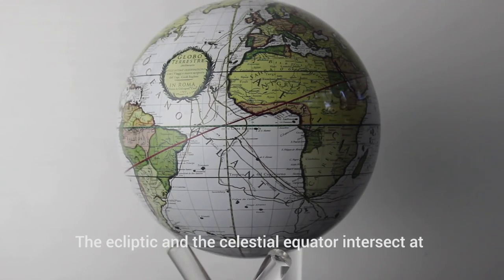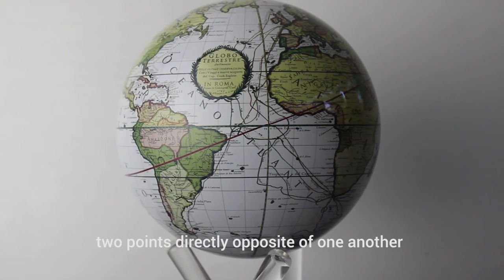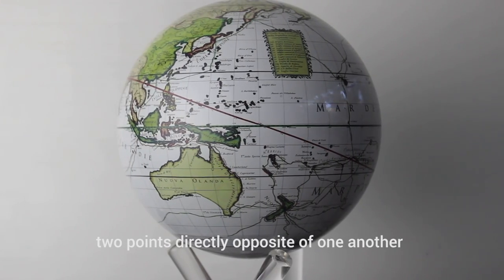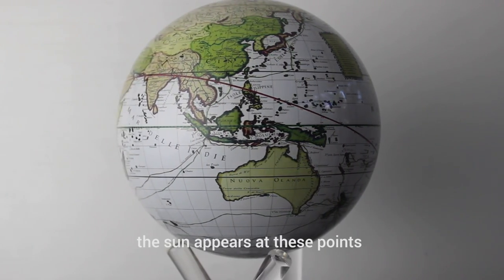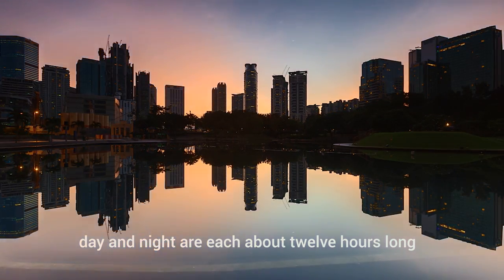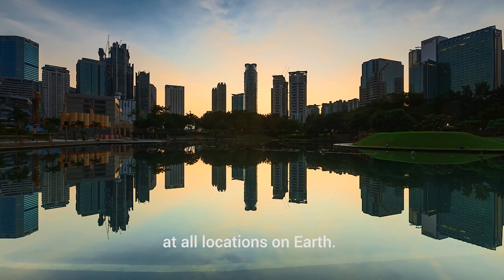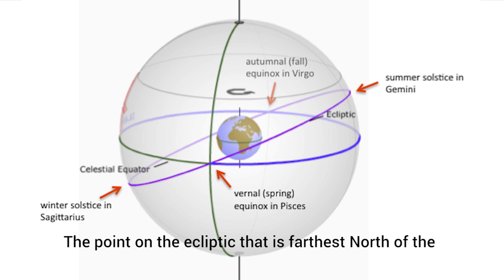The ecliptic and the celestial equator intersect at two points, directly opposite of one another. These are the equinoxes, and when the Sun appears at these points, day and night are each about 12 hours long at all locations on Earth.